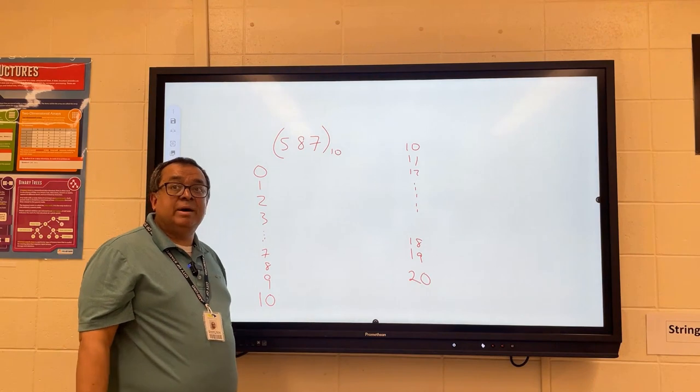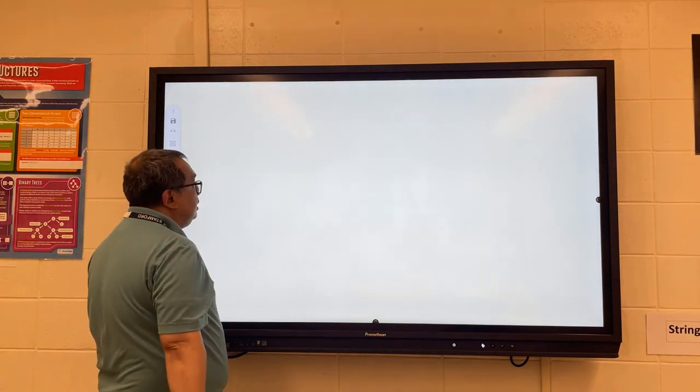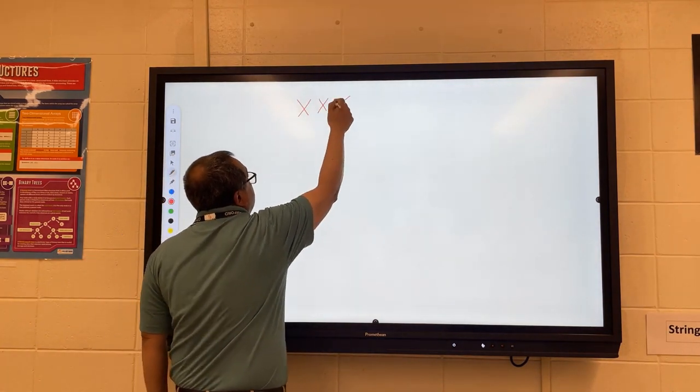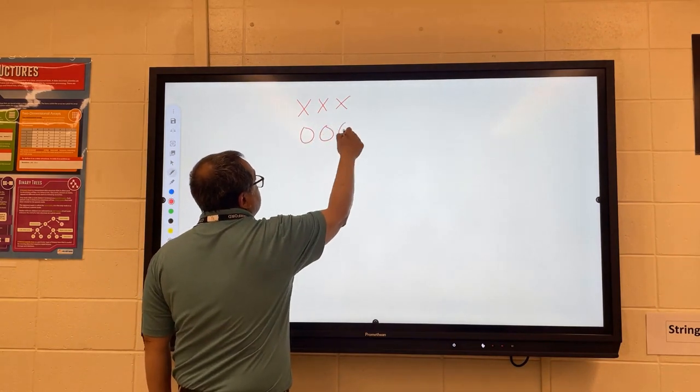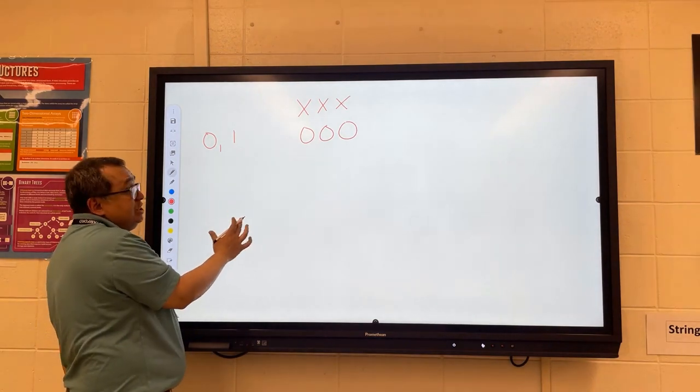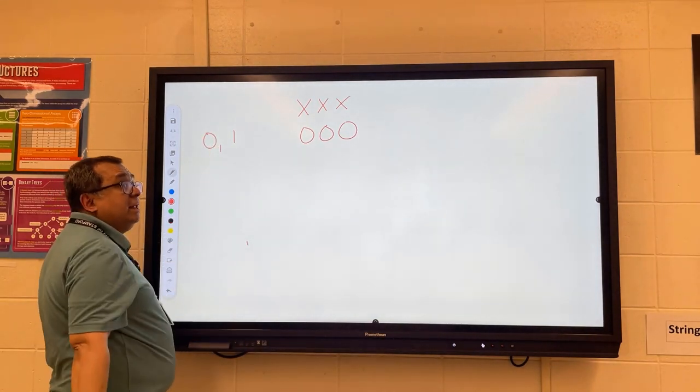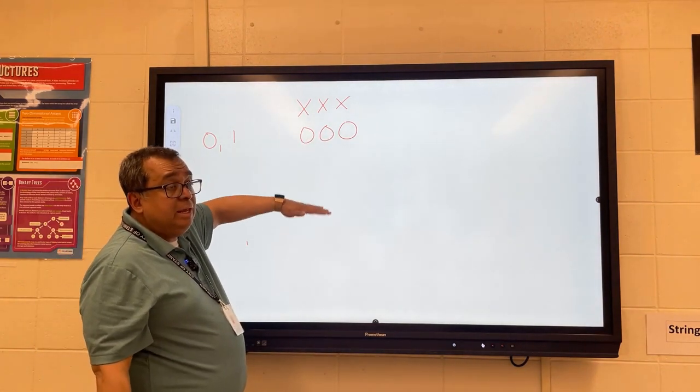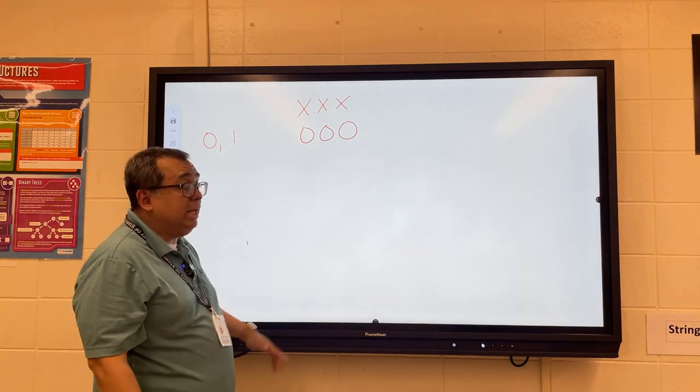So the next base we're going to talk about today is binary. So let's look at that for a second. Let's say I want to have a three digit number and I want to count. So I start with this. Now binary only has these two digits. Base 10 had 10 digits. Binary base 2 has only two digits. I'd like you to take out a piece of paper now and write down for me in sequence what the binary number sequence would be here.